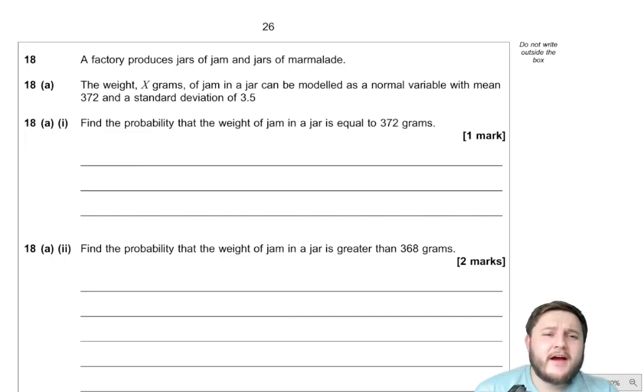A factory produces jars of jam and jars of marmalade. The weight X grams of jam in a jar can be modeled as a normal distribution with mean of 372 and a standard deviation of 3.5. Find the probability that the weight of the jam in the jar is equal to 372.